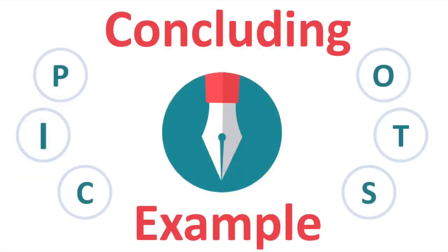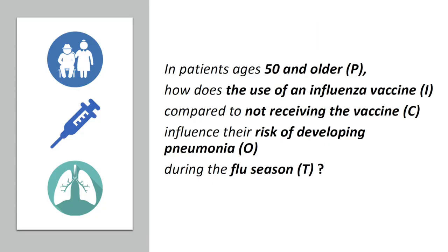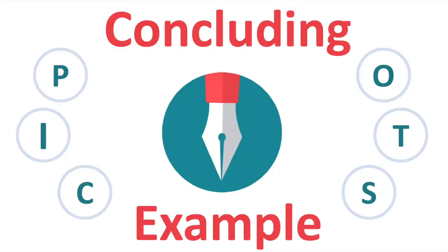To conclude, I will review some PICO questions. For example, in patients aging 50 years or above, how does the application of the influenza vaccine compared to not obtaining the vaccine influence the possibility of contracting pneumonia during the period of flu season? This example illustrates how a question can be easily constructed by applying the PICO framework. The PICO research framework is used to help frame and answer questions that are clinically relevant. These few easy steps will help you define your question in a more answerable, precise, and concise way.